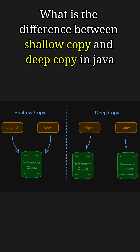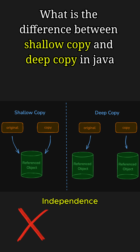So the key difference lies in the independence. Shallow copies share nested object references, risking unintended side effects, while deep copy creates fully independent duplicates even to the sub-object level.